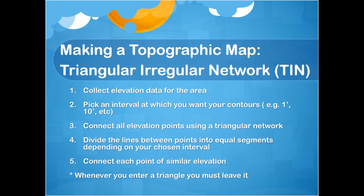Topo maps can be hand drafted using the Triangular Irregular Network, or TIN method, which involves five steps. First, elevation data is collected through a land survey of the area. Second, pick an interval for the contours — typical intervals can be 1 foot, 10 foot, or 100 feet, depending on the scale of the project. Third, connect all the elevation points using a triangular network. Fourth, divide the lines into equal segments based on the chosen contour interval, marking each interval with a small hash mark perpendicular to the line.